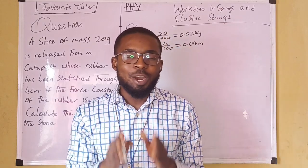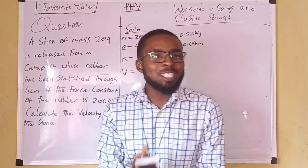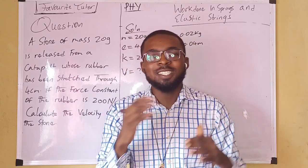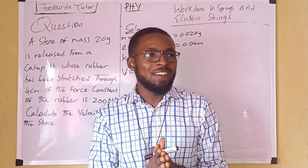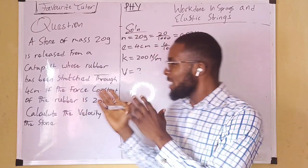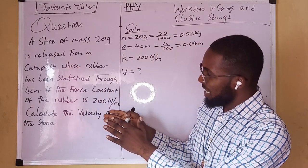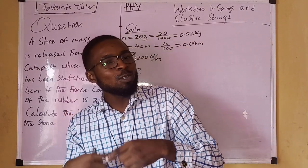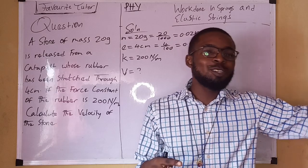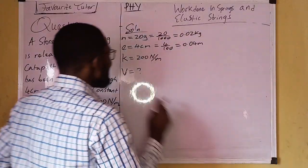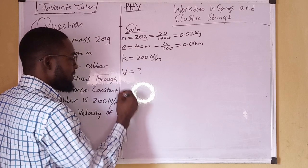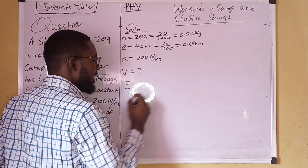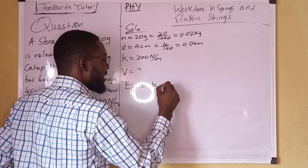Remember conservation of mechanical energy — energy cannot be destroyed or created, but can be transformed from potential to kinetic energy. This means that the elastic potential energy of the stone is being converted to kinetic energy. So to solve this question and get the velocity, the elastic potential energy equals the kinetic energy of the stone.